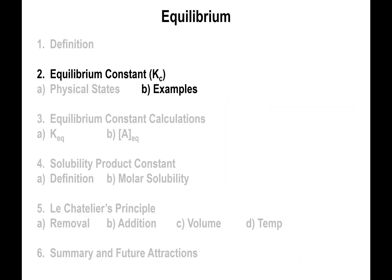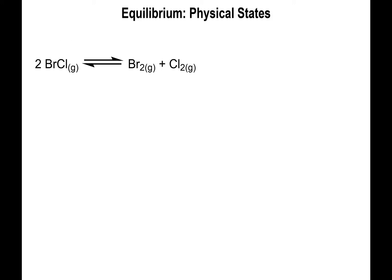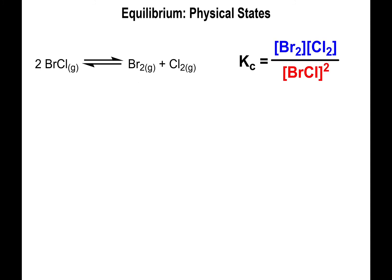Let's do a few examples. First: 2 BrCl(g) → Br₂(g) + Cl₂(g). Since everything is a gas, everything appears in the equilibrium expression. The products Br₂ and Cl₂ multiply each other in terms of concentration — brackets represent concentration — so you have [Br₂] times [Cl₂].